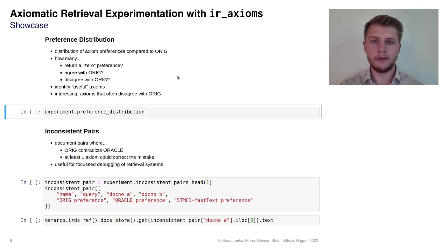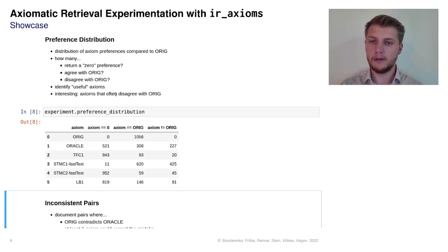Let us now compute the distribution of axiom preferences compared to the original ranking. That is, how many document pairs have a 0 preference, or how often do axioms agree or disagree with the original ranking order. This table can be used to identify useful axioms which often disagree with the original ranking. For example, the STMC1 axiom here might often be violated because BM25 does not take semantic similarity into account.